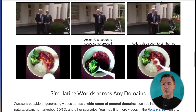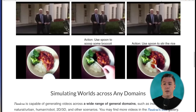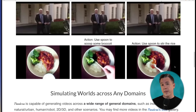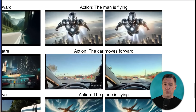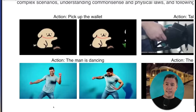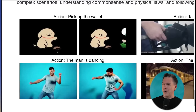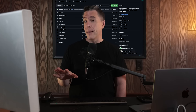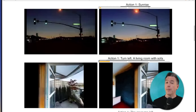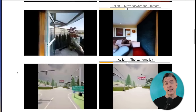Another really impressive example is 'use spoon to scoop some broccoli' — because Pandora has an LLM and a visual model attached to it, it knows what the broccoli is. In an alternate, it's 'use the spoon to stir some rice,' and Pandora knows what the rice is. The POV driving stuff looks really good — there's a lot of dash cam footage in the training material. Pandora is very much still in the research phase, although there is code available on GitHub. I'll keep an eye on it and let you know as things develop.